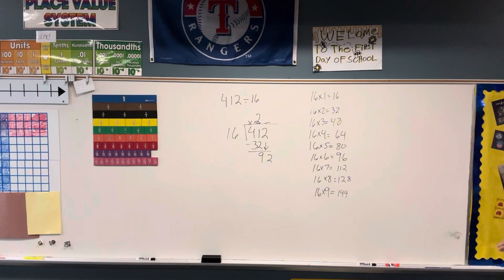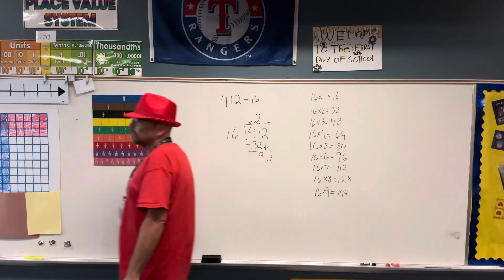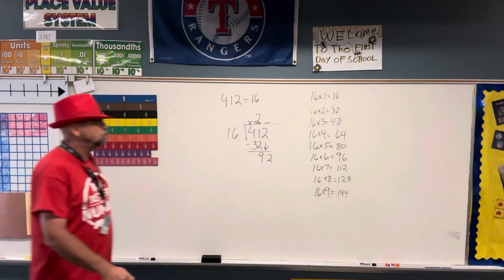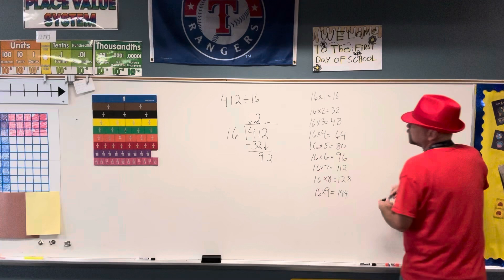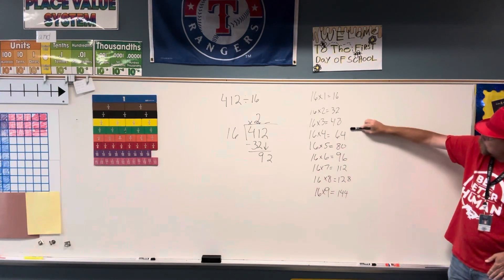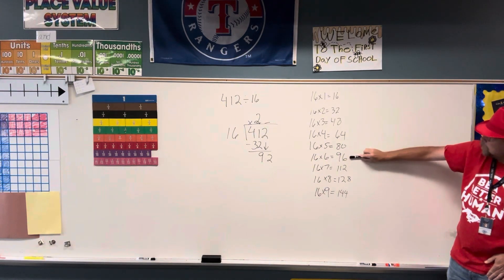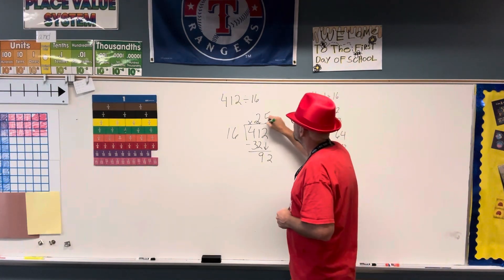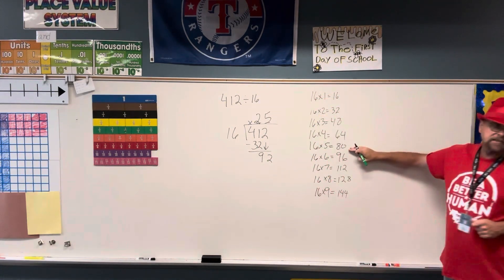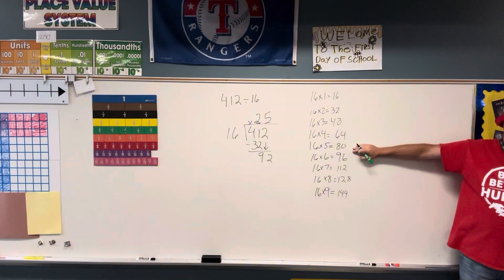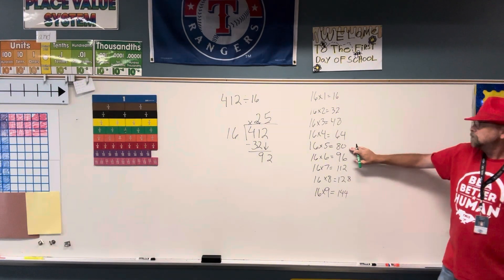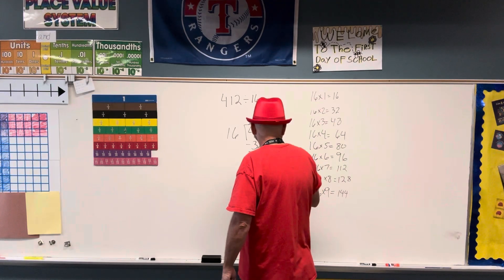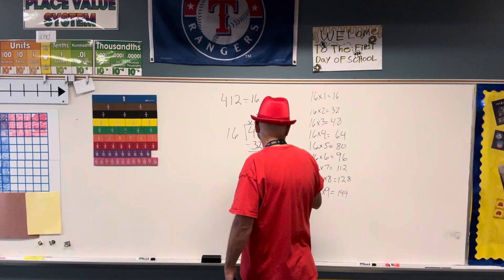Now I've got to figure out how many times 16 goes into 92. I want to get as close as I can. 16, 32, 48, 64, 80, 96 — 96 is too big. So it must be 5. And 5 times 16, because I've already done the hardest part of division which is the multiplication, is 80. Subtract, and I get 12.